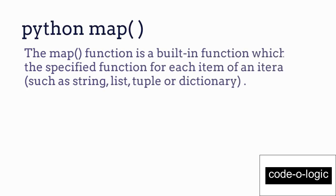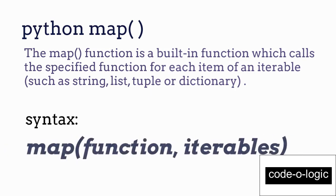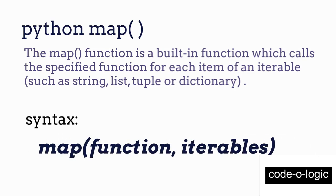The map function in Python is a built-in function which calls a specific function for each item of an iterable. That iterable may be a string, list, tuple, or dictionary. This is the syntax for the map function, where it holds two parameters: one is the function name that is already defined, and the other is the iterable where each item is passed to the specified function.